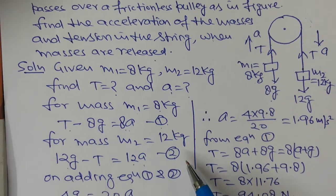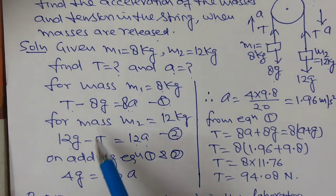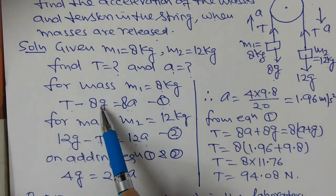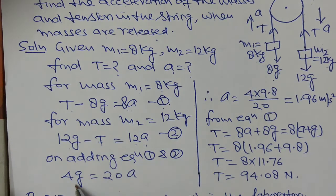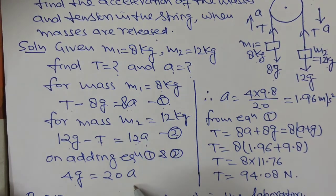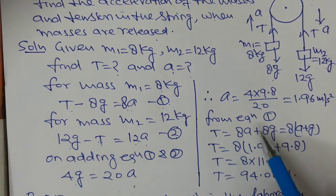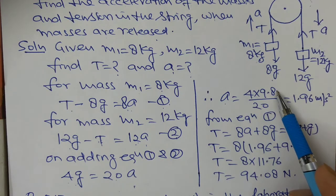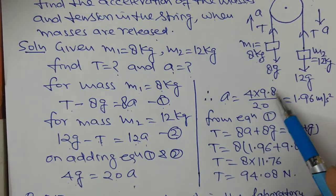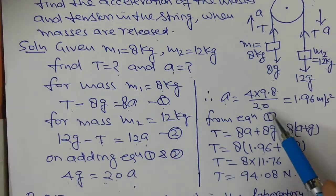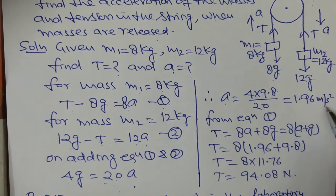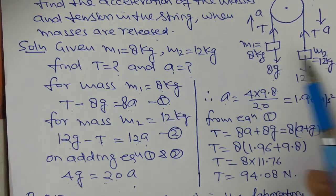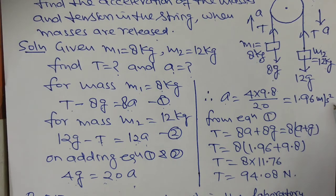Adding equations 1 and 2, T cancels out: 12g minus 8g equals (12 plus 8)A, so 4g equals 20A. Therefore A equals 4 into 9.8 upon 20, which on solving gives acceleration equals 1.96 meters per second squared. This is the acceleration of both masses.